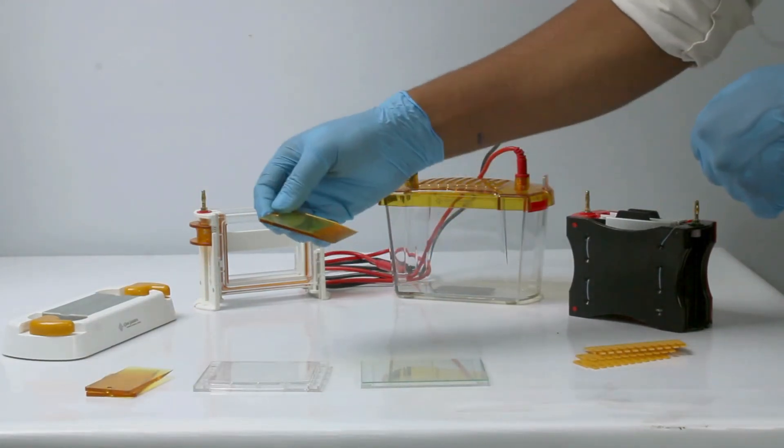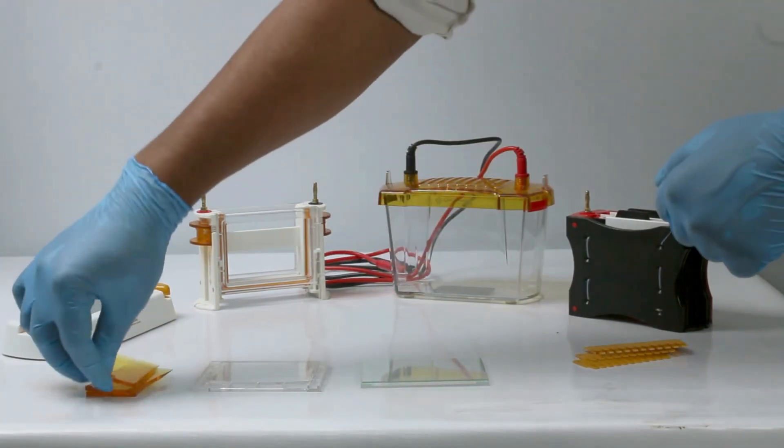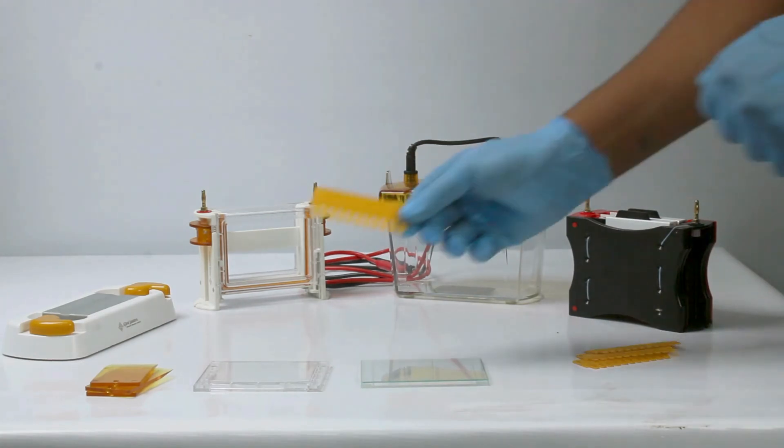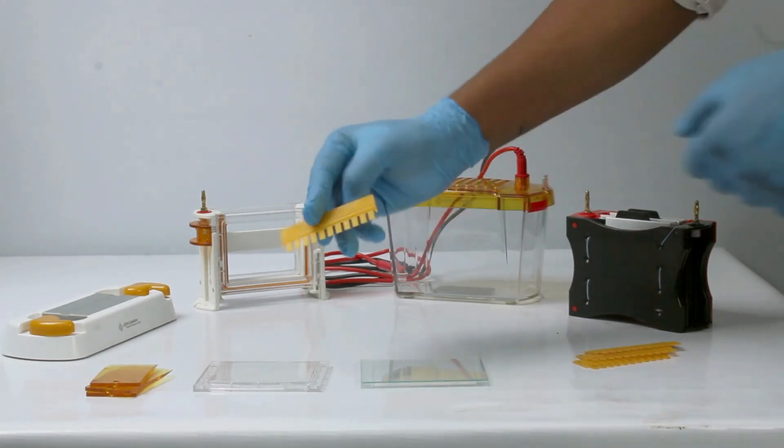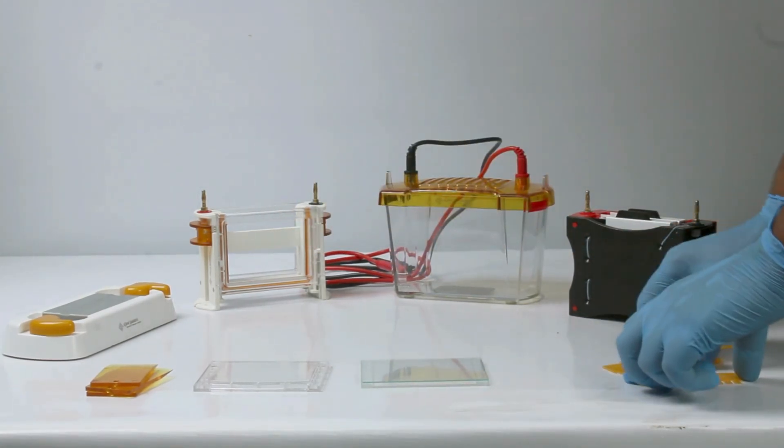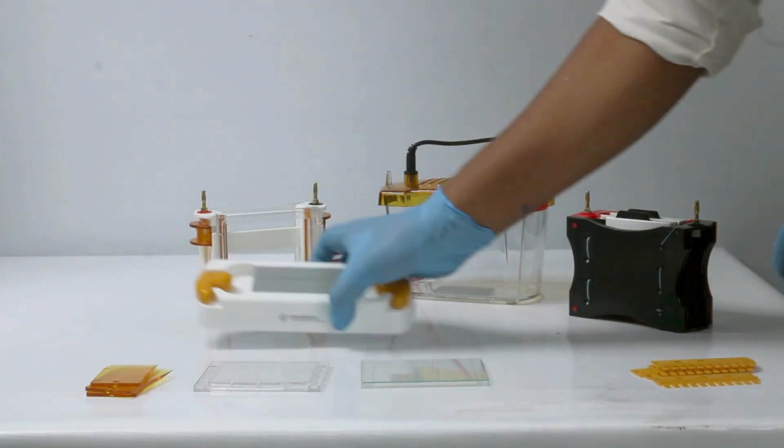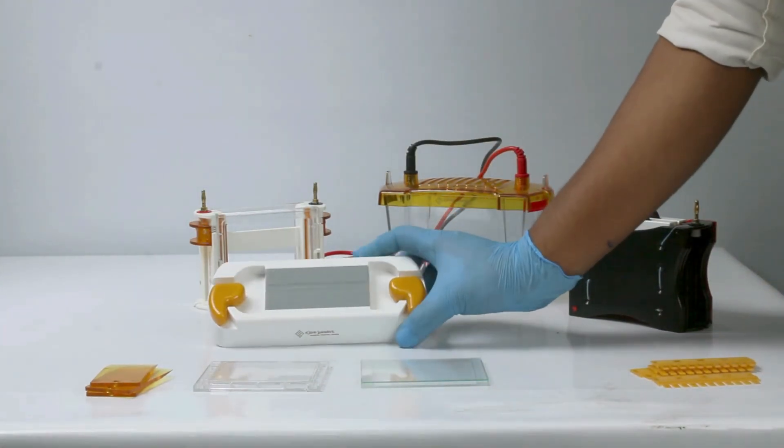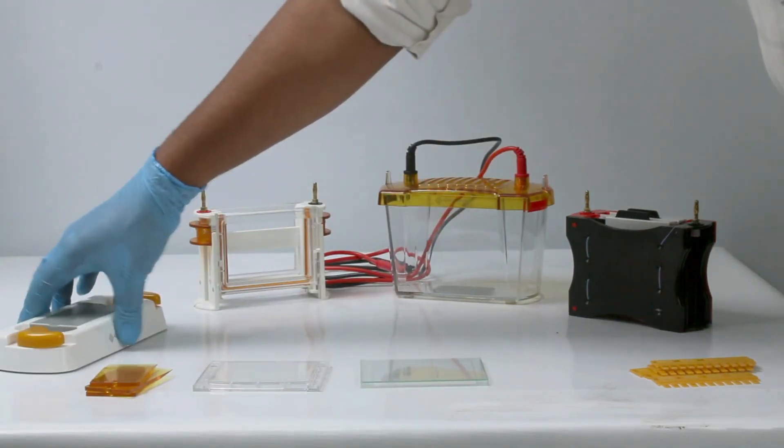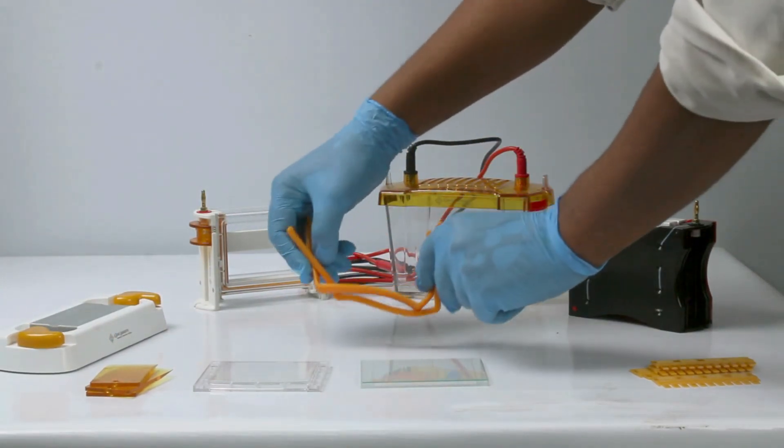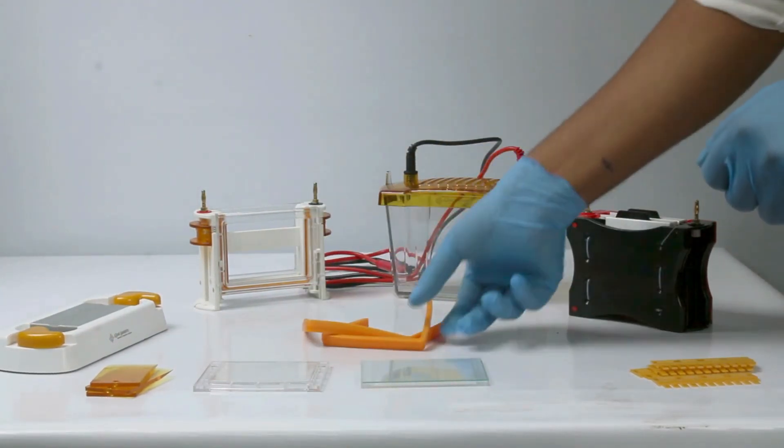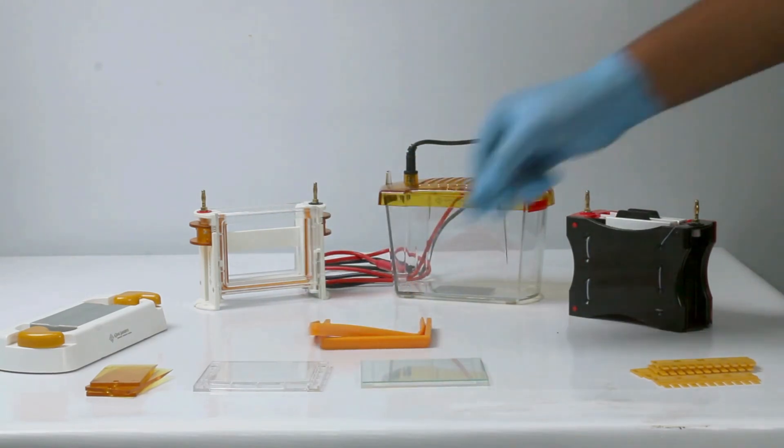This is the gel cutting card. We also provide two combs of 1.5mm thickness and two combs of 1mm thickness designed to create uniform samples. This is the gel making base. Additionally, we provide two fabricated gel seals to simplify the gel making process.